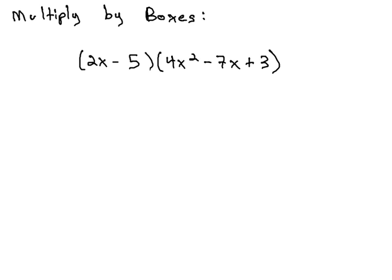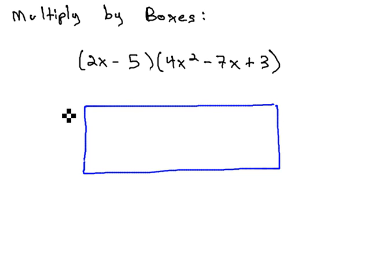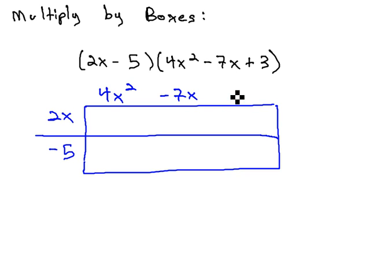We'll do this with the example 2x minus 5 times 4x squared minus 7x plus 3. To set this up for a box, we're going to need a longer box, as we have more terms in the second polynomial. We'll put the 2x and the minus 5 down the side, and the 4x squared minus 7x plus 3 across the top.